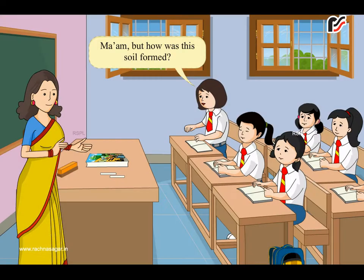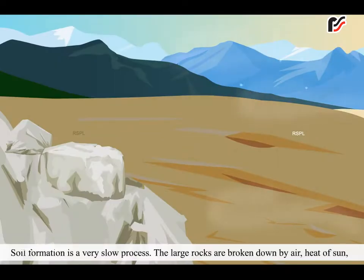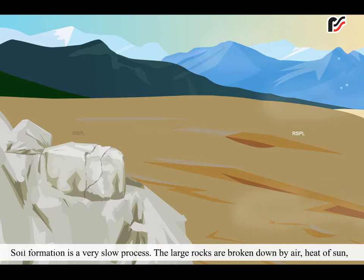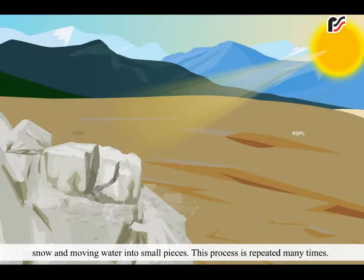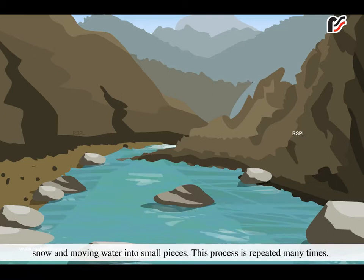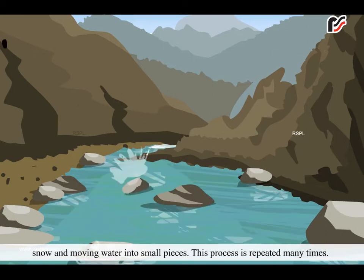Ma'am, but how was this soil formed? You asked a very good question. Let me answer that. Soil formation is a very slow process. The large rocks are broken down by air, heat of sun, snow and moving water into small pieces. This process is repeated many times.